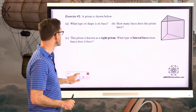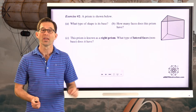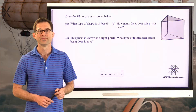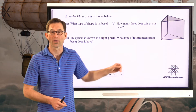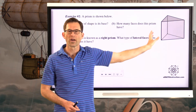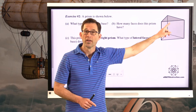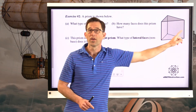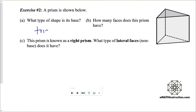Let's work with some more prisms — exercise number two. A prism is shown below. What type of shape is its base? It's a triangle. Even if it were turned in a different orientation it would still be a triangle — the two bases are parallel and all the other sides are parallelograms.